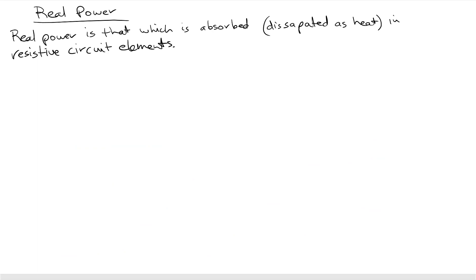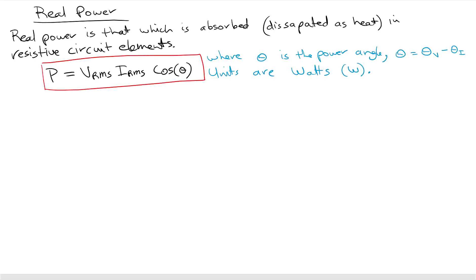Real power is the power that's absorbed, or more accurately dissipated as heat, in resistive circuit elements. The equation from the power triangle is the RMS voltage times the RMS current times the cosine of the power angle, and the units for real power are in watts.